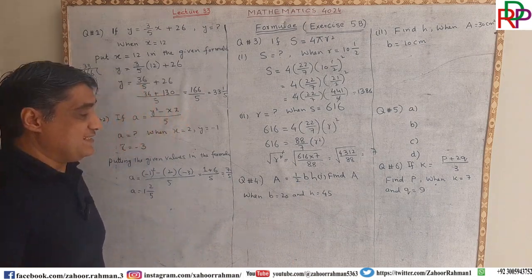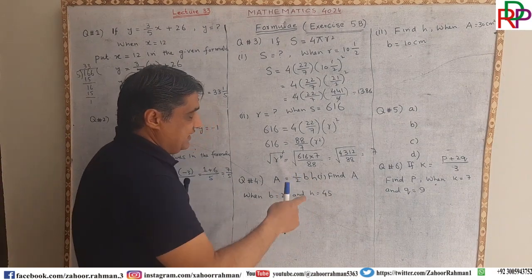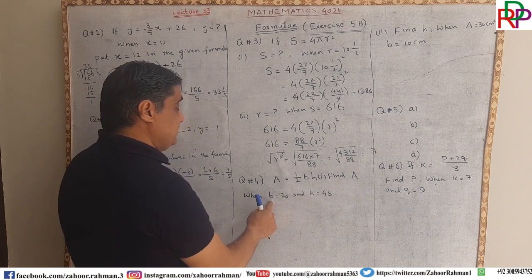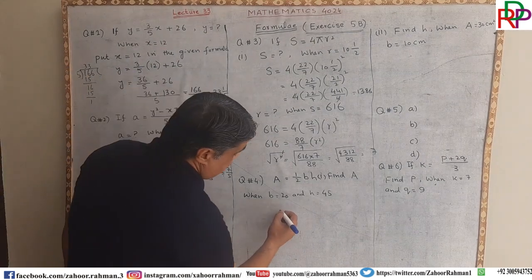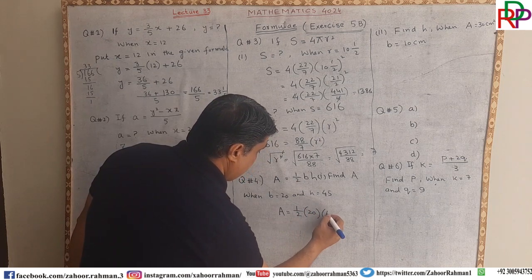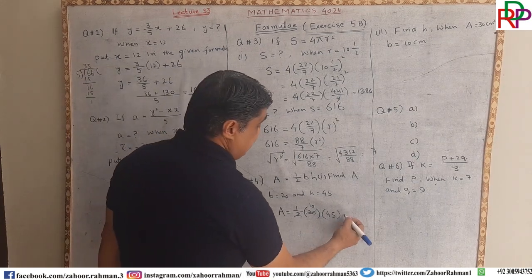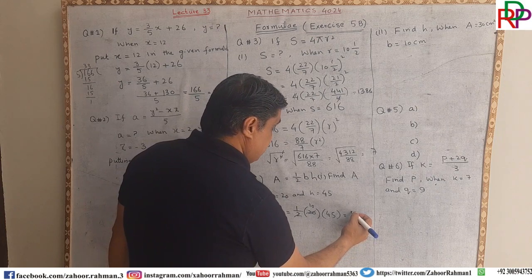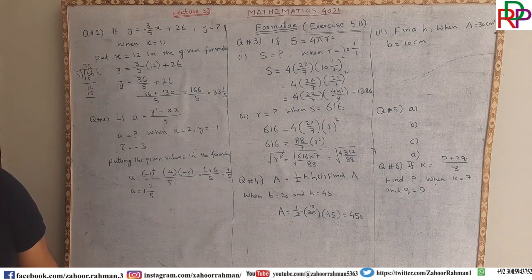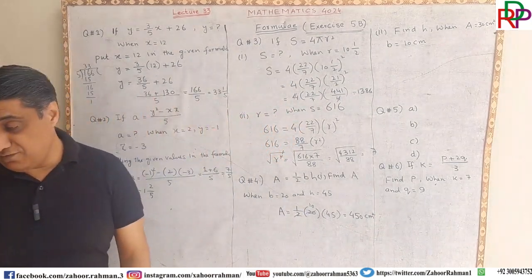The area of a triangle is given as A equals 1 over 2 times b times h, where b is the base and h is the height of the triangle. They say: find the area if b equals 20 cm and h equals 45 cm. We write 1 over 2 into 20 into 45. Two ones are 2, 2 tens are 20, and 10 multiplied by 45 gives 450.